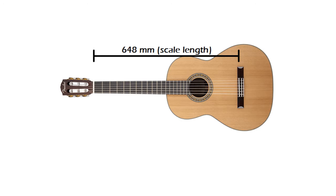If we consider a 648mm bridge-to-nut distance, also known as a scale length, when you put your finger on the first fret, you reduce the string's vibrating length to 648mm divided by the 12th root of 2, that is, 611.63mm. Then, the first fret would be placed at 36.37mm from the nut.